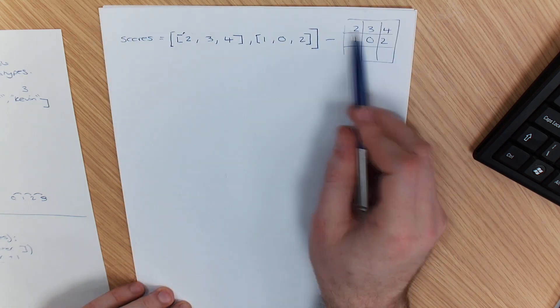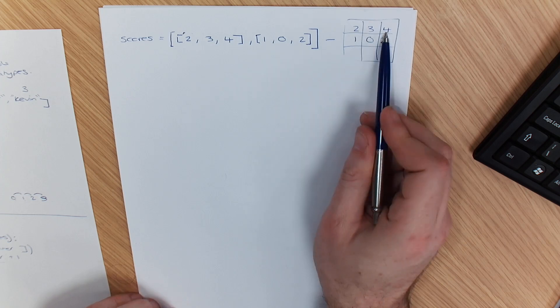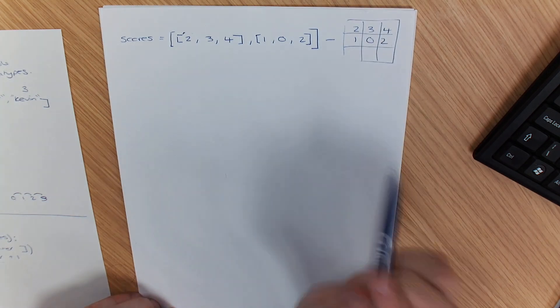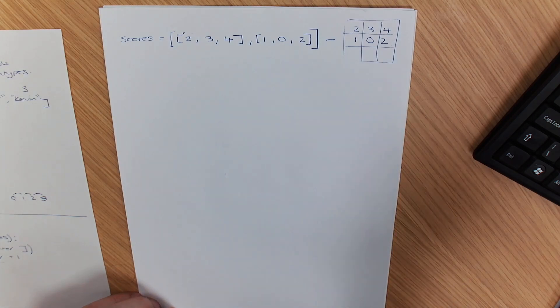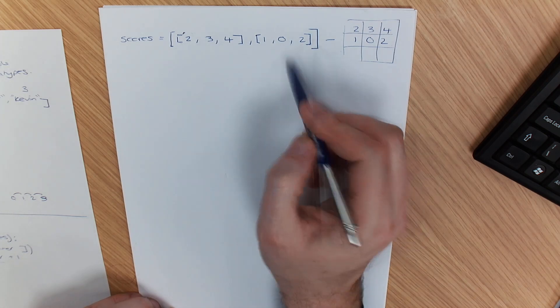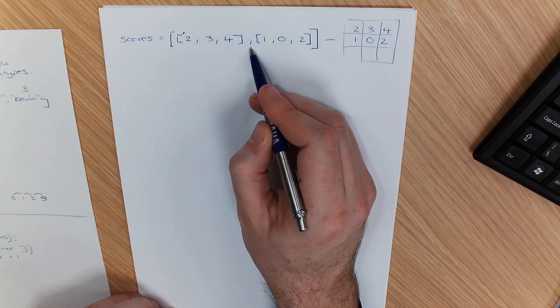This is what it looks like in a grid. I've got 2, 3, 4, 1, 0, 2. What we do to split that up to write it as an array is we have one set of square brackets per row and then you separate it by a comma.